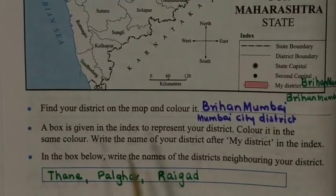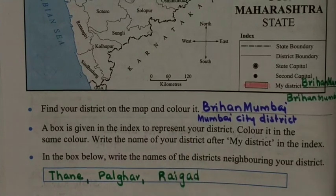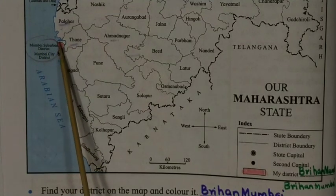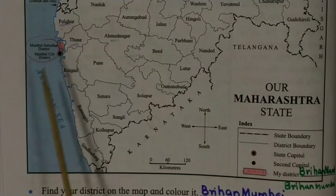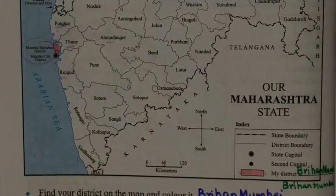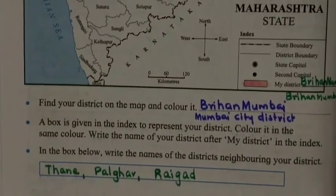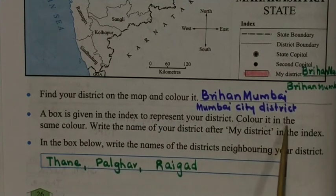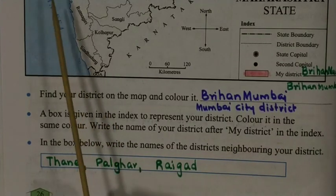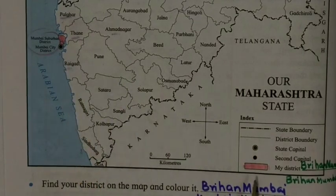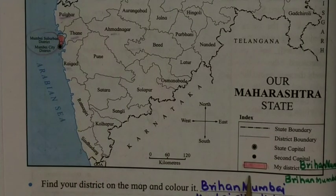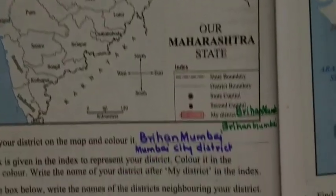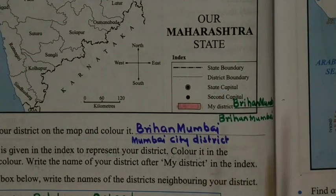First question: find your district on the map and color it. Our district is Brihanmumbai — comprising Mumbai Suburban District and Mumbai City District. I colored it red. In the index also, use the same color and write the name: Brihanmumbai.